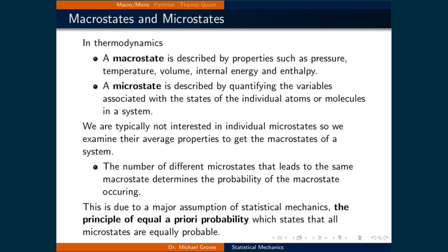In thermodynamics, a macrostate is described by properties such as pressure, temperature, volume, internal energy, and enthalpy. A microstate is described by quantifying the variables associated with the states of the individual atoms or molecules in a system. We'll go over a couple of examples to illustrate these two points. For now, think of a macrostate as a group of similar microstates.